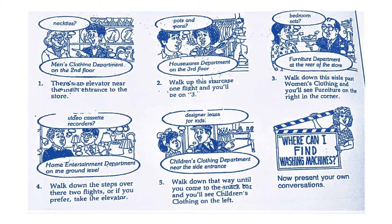Exercise Number Four — we have computers and related items in the home entertainment department on the ground floor. Walk down the steps over there, two flights, or if you prefer, take the elevator. ممكن تطلع درجتين يعني تأخذ الدرج، أو تركب الأسانسير — المصعد.